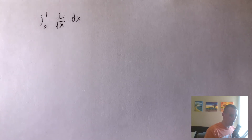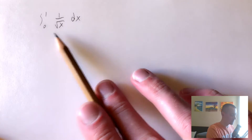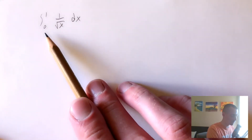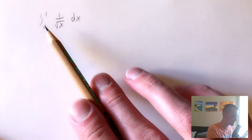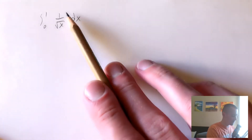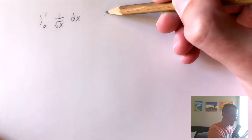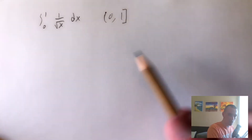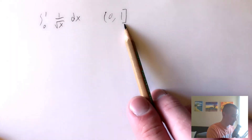Specifically, the formula we're going to be talking about is the one that says if we're trying to integrate a function which is continuous between two numbers but not at one of our endpoints, it tells us how to deal with that integral. So basically, 1 over the square root of x is continuous on the interval from 0 to 1, but notice one endpoint is included and one is not — it is continuous at 1.